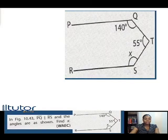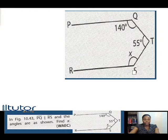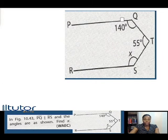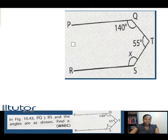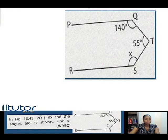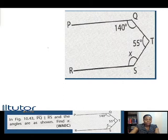It's given that line PQ is parallel to line RS. We're told to find X. Now between these two parallel lines, line PQ and line RS, there could exist other parallel lines. We can create other parallel lines so as to project some relevant paths that can help us solve this question. So let's recreate this diagram a little bit, not changing anything. Let's create another parallel line here.